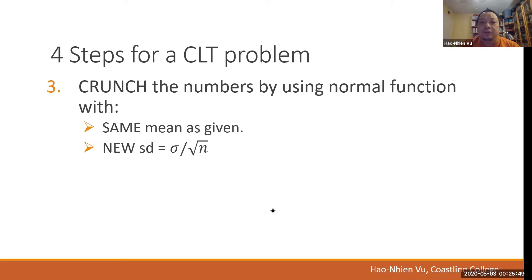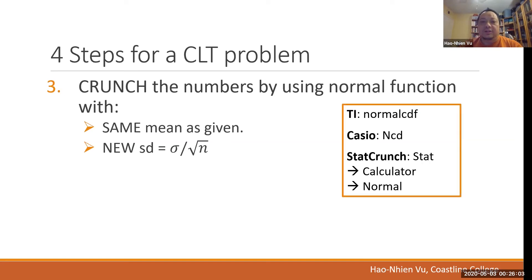You do the number crunching. You crunch numbers by using the normal function. On the TI, it's normal CDF. On the Casio, it's NCD. And on stat crunch, it's stat calculators normal. And you will enter the same mean as in the problem, but you must compute a new standard deviation. Sigma of x bar equals sigma divided by square root of n. That's the standard deviation you will use in your calculator or software.